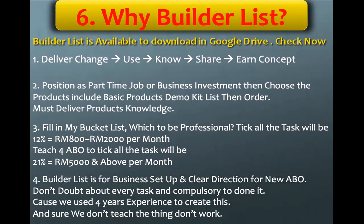The Builder List is for yourself — follow it when you lose your direction. The Action Step is your direction for working with prospects and customers — know the difference. The fourth point: the Builder List is for business setup and clear direction for new ABOs. Don't doubt any task — it was created with around four years of experience and we don't teach things that don't work. Be confident in it; if you don't understand why, refer to your upline.